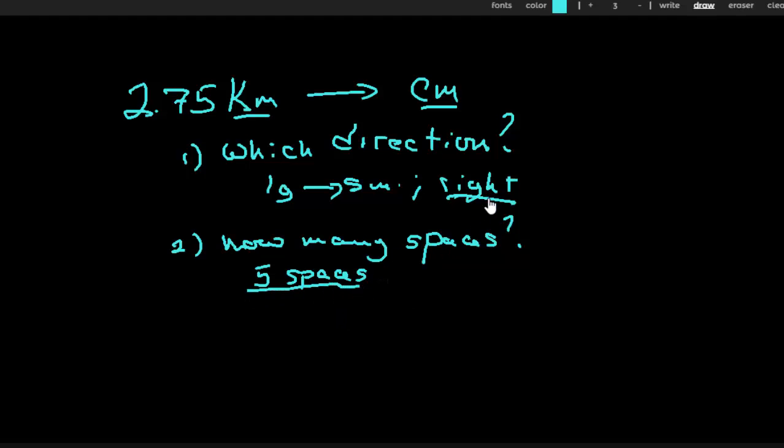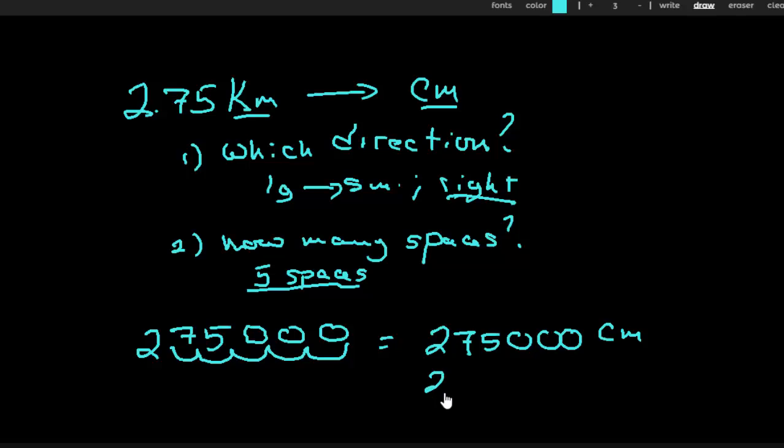So I now have my direction and my number of decimal places to move. So I start with the two, the seven, and the five. And the decimal point was right here between. It's going to move one, two, three, four, five spaces. I'm going to have to put in some place holding zeros. Now these are not significant figures. These are place holding zeros. So two, seven, five, zero, zero, zero centimeters. Or if you prefer, 2.75 times 10 to the fifth centimeters, if you want to put it into scientific notation and retain the right number of sig figs.